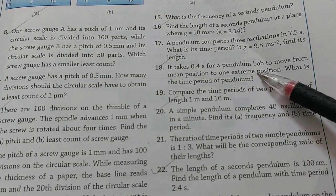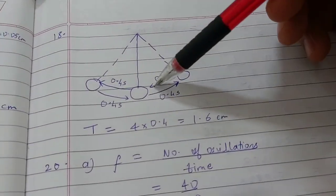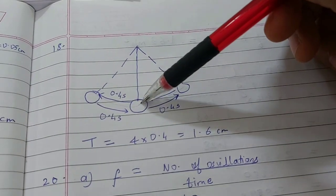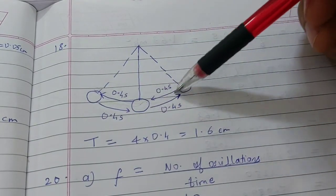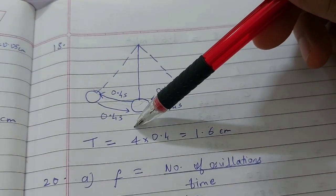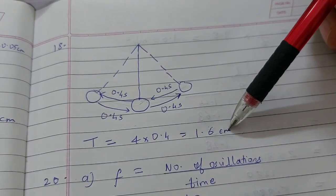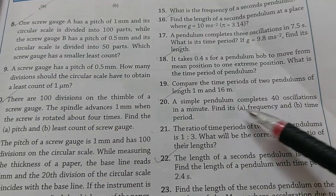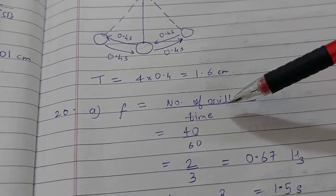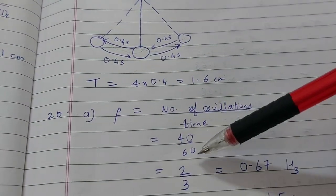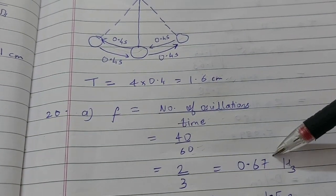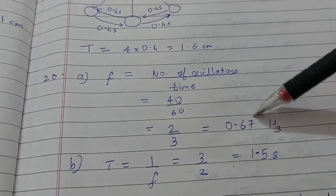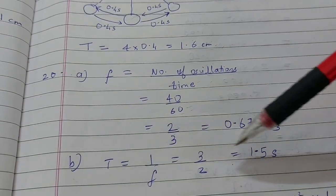The 18th sum: a pendulum bob takes 0.4 seconds to move from the mean position to one extreme. A full oscillation covers mean → extreme → mean → other extreme → mean, so four such quarter-periods: 4 × 0.4 = 1.6 seconds is the time period. For frequency, take the reciprocal and convert to meters to get the answer in hertz. The 20th sum: 40 oscillations in one minute gives frequency = 40/60 ≈ 0.67 Hz. Time period is the reciprocal of the exact fraction, giving 1.5 seconds.